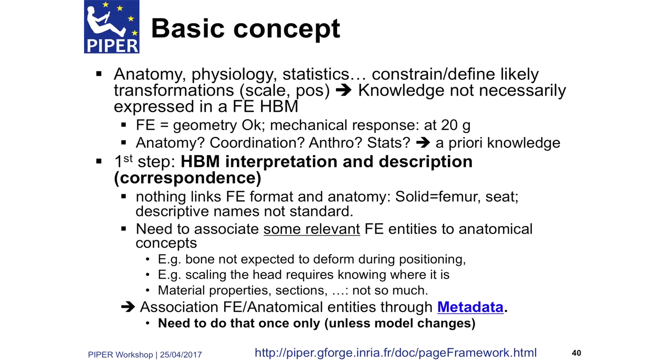The first step in the basic concepts is to establish a correspondence so we can link whatever is in the human model to this a priori knowledge. We need this association because, for example, bones are not expected to deform during positioning — if you don't know it's a bone, it may deform. You need to know where the head is, as we saw in the child model. Material properties may not need to be fully described for scaling. This association is what we call metadata.